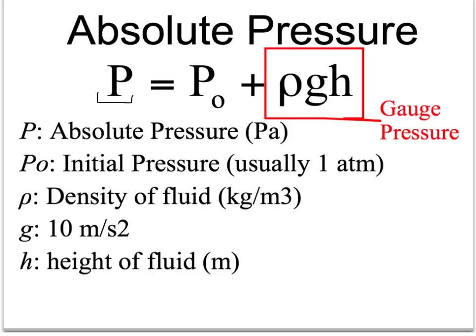You'll use this formula: absolute pressure P, measured in pascals, equals the initial pressure — which is usually one atmosphere, because we're usually just talking about something on Earth that already had atmospheric pressure on it — plus rho G H. And this rho G H is technically referred to as the gauge pressure.